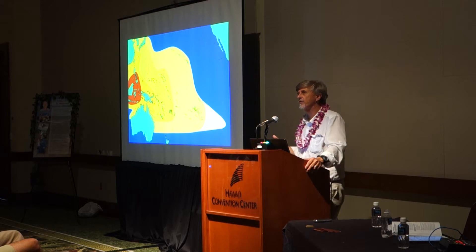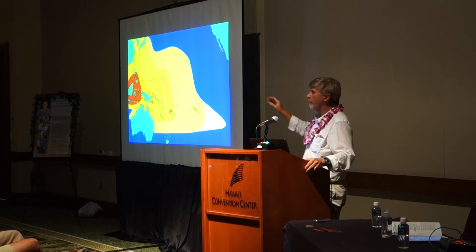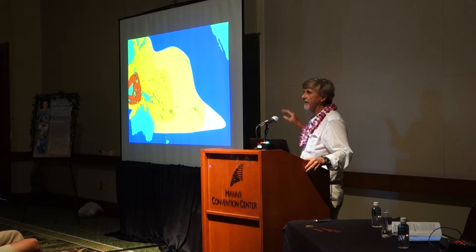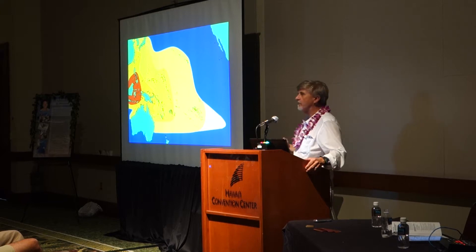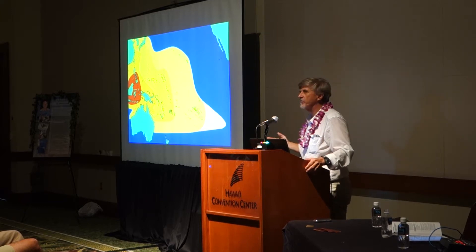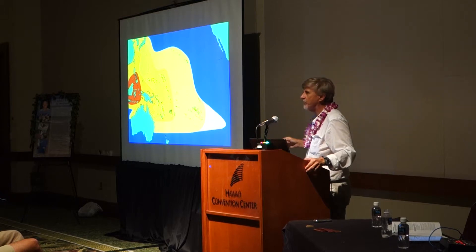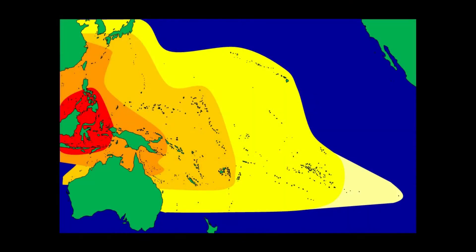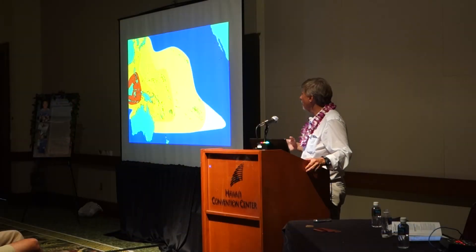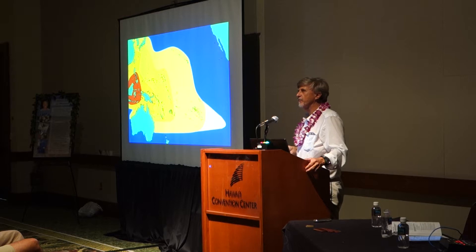There's the center of origin hypothesis, which suggests that species are forming in the coral triangle and over time percolate out across the Pacific. There's the center of accumulation hypothesis, which suggests that most species originate in the Pacific basin and accumulate in the coral triangle. There's the region of overlap hypothesis, which suggests the coral triangle is rich in diversity because it has components of both the Pacific and Indian Ocean fauna overlapping in the same area. Various other hypotheses invoke vicariance and ecological factors as well.